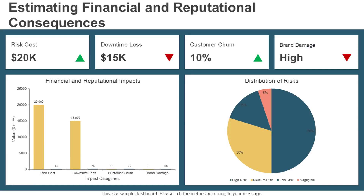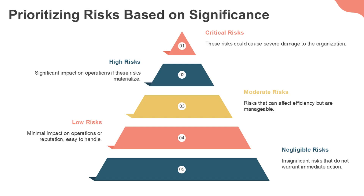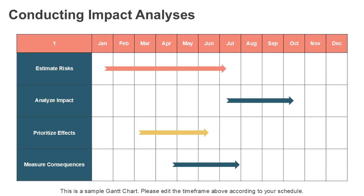Once risks are identified, they must be evaluated to determine their potential impact and likelihood of occurrence. This analytical phase involves estimating the financial, operational, and reputational consequences of each identified risk, determining the probability of threats exploiting specific vulnerabilities, prioritizing risks based on their significance to the organization's operations, and conducting impact analyses to quantify potential costs and business disruptions.